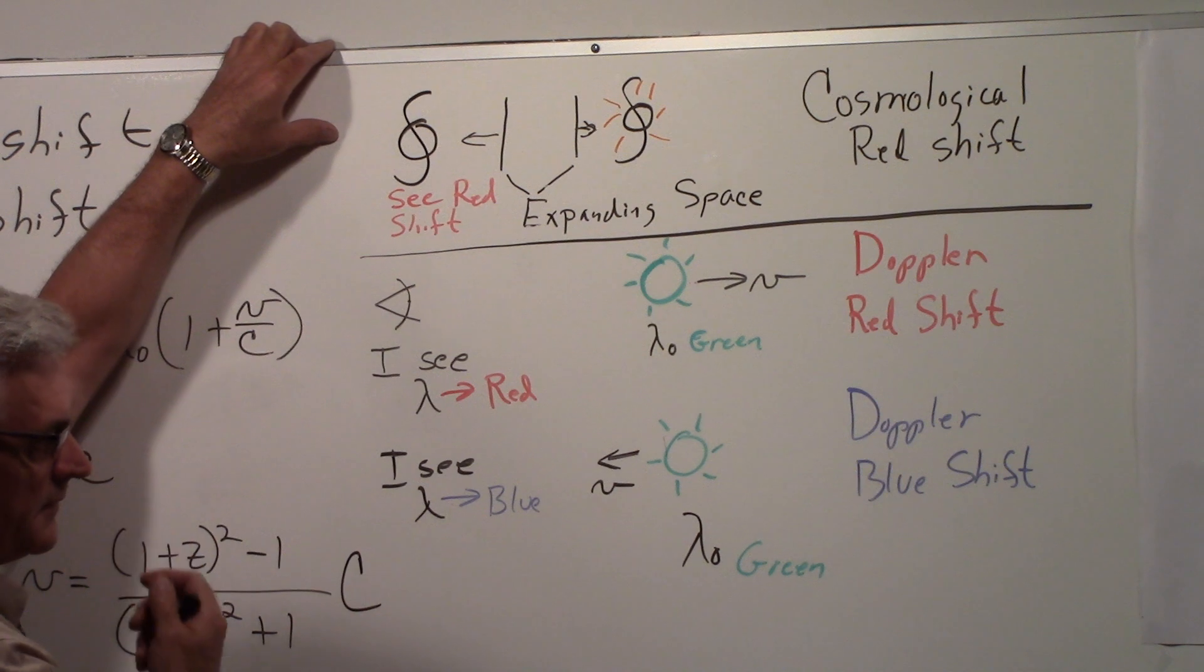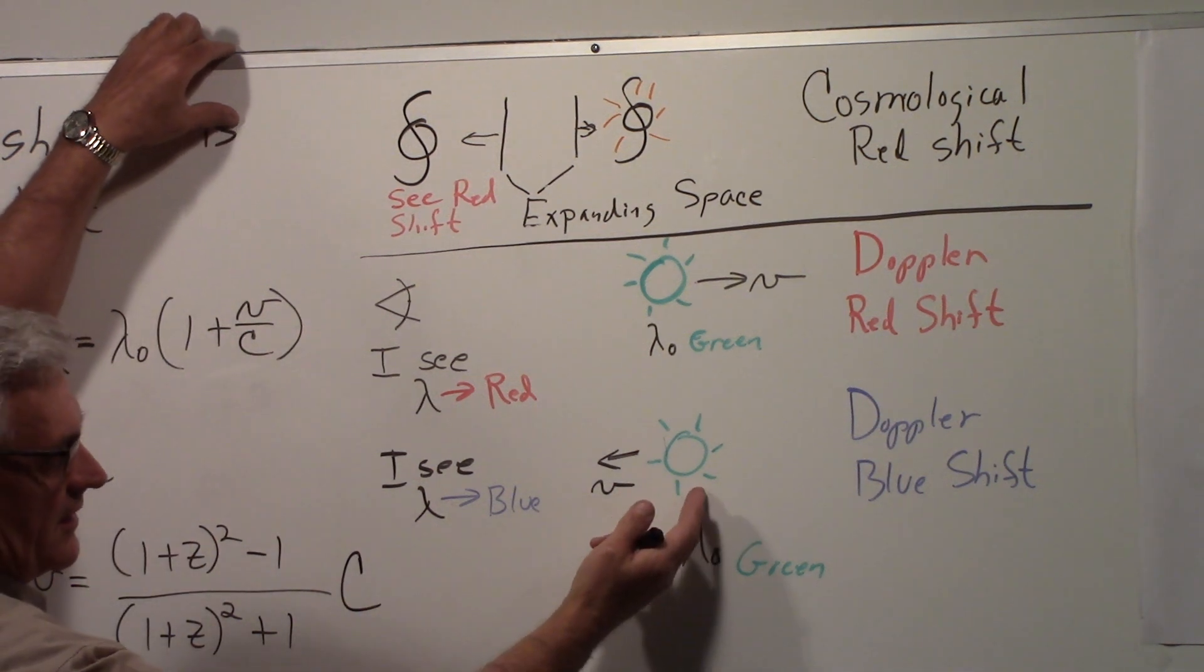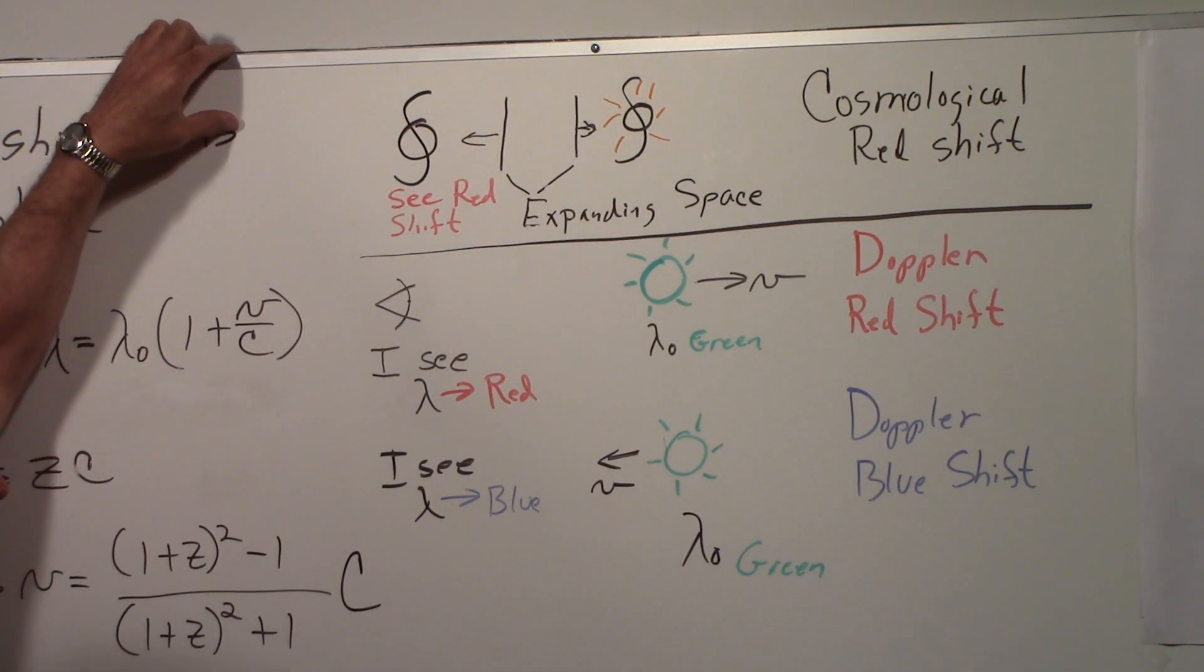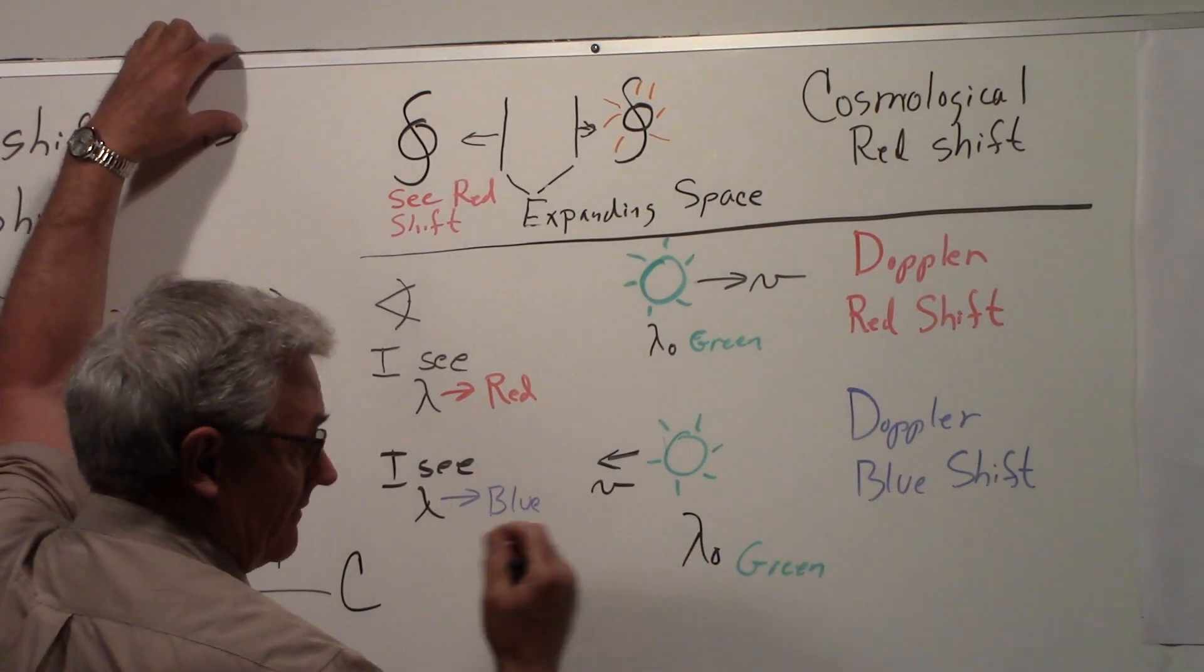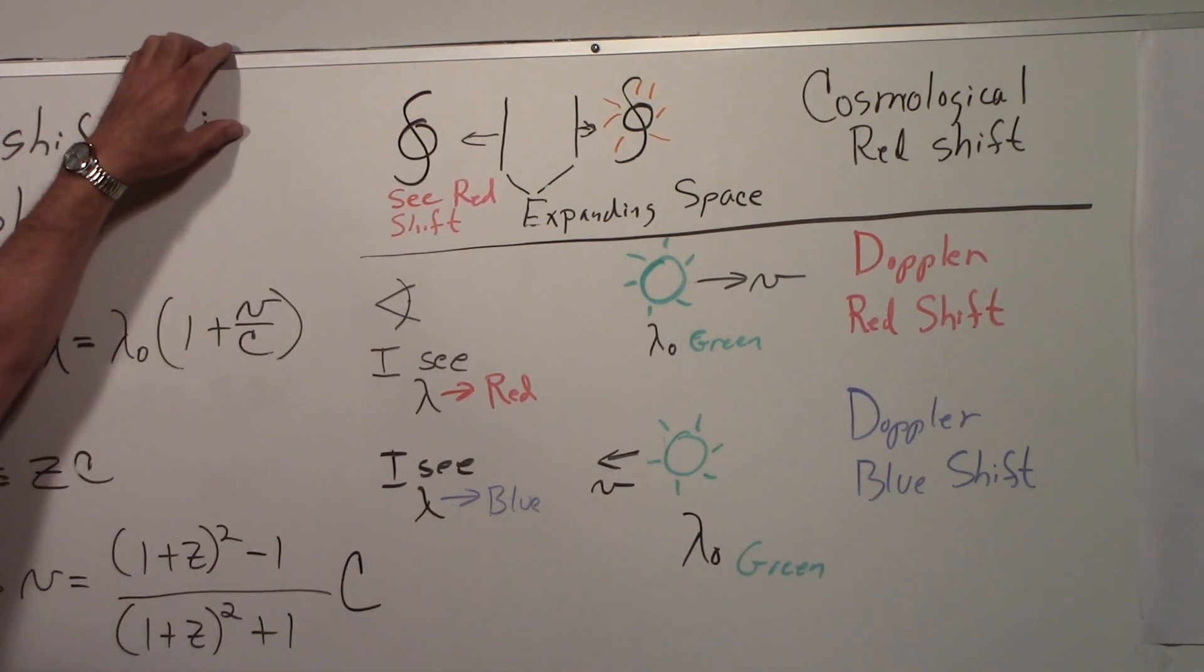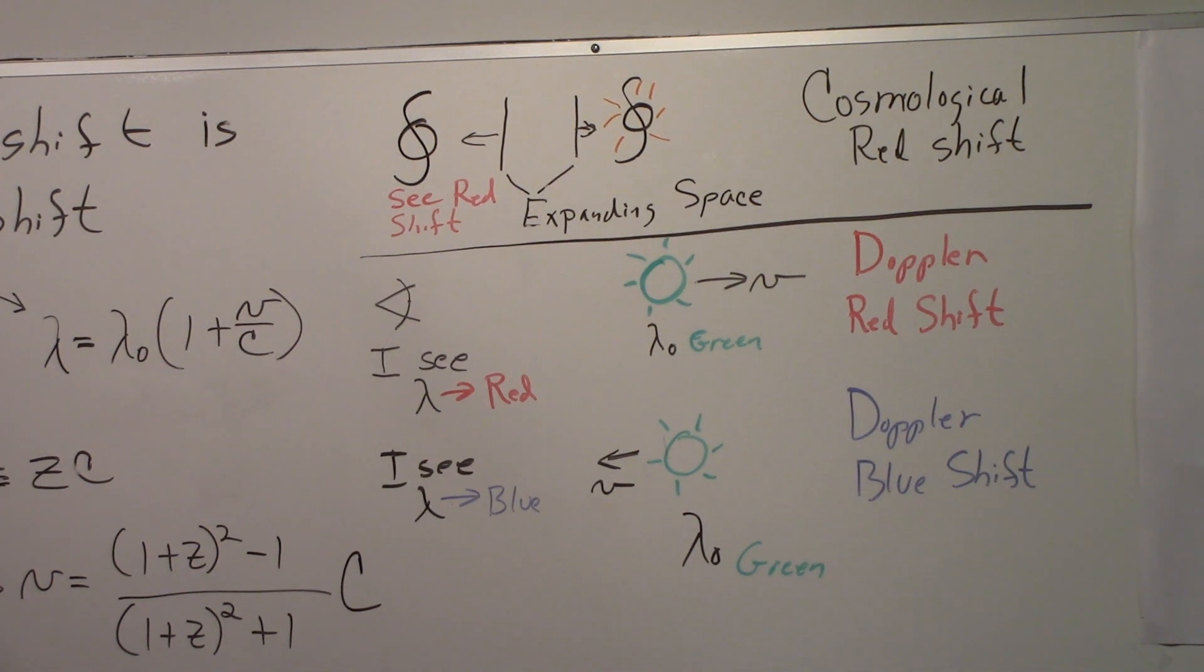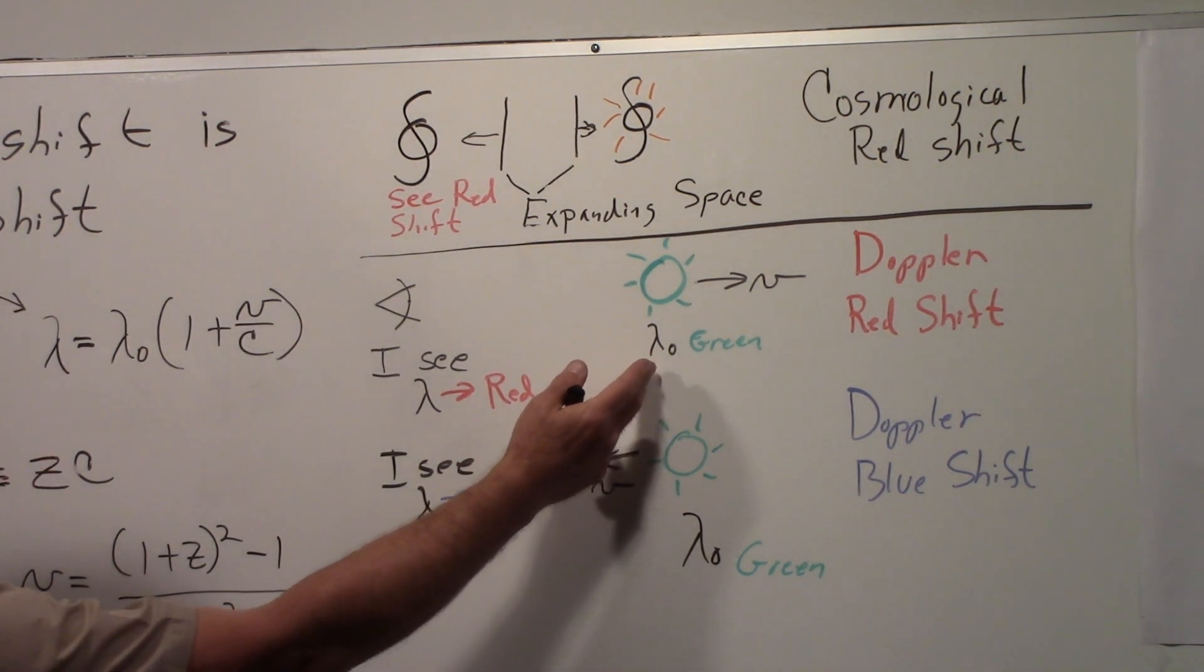That's a Doppler redshift. Now let's suppose that green object is moving towards me. I will see the wavelength shifted towards the blue part of the spectrum, and that is called a Doppler blue shift.